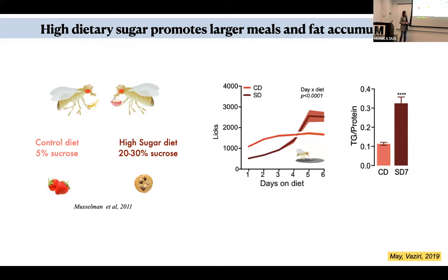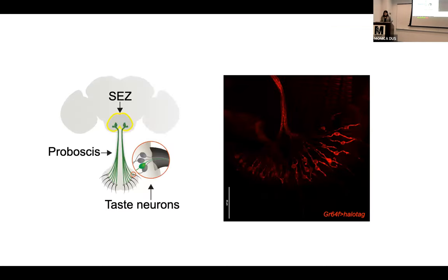When we put fruit flies on this diet and measure their feeding behavior, flies on a control diet lick the same amount over a week, but flies on a high sugar diet show an escalation in feeding behavior. By day seven, we can see an accumulation of fat mass as triglycerides over lean mass. If we let them go for several more days, they also develop hallmarks of metabolic syndrome like insulin resistance and inflammation.